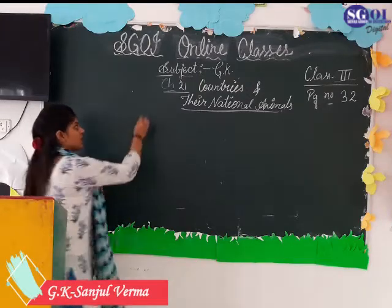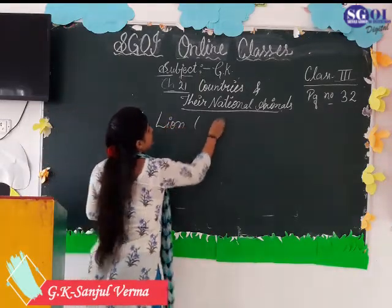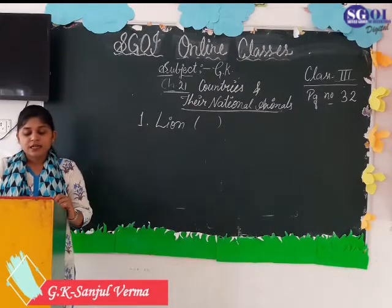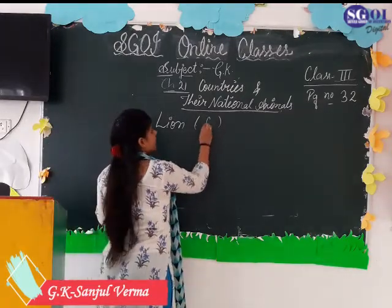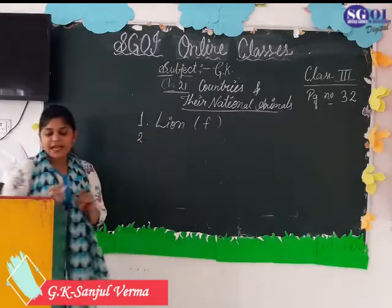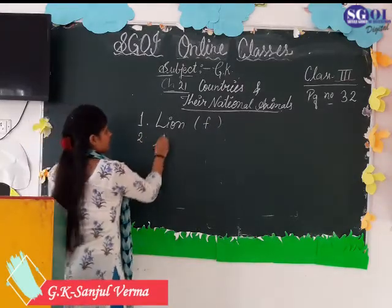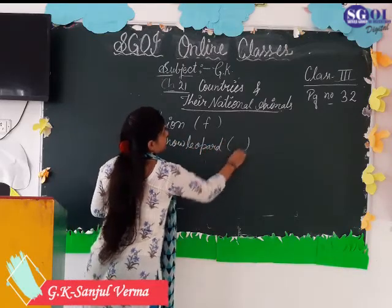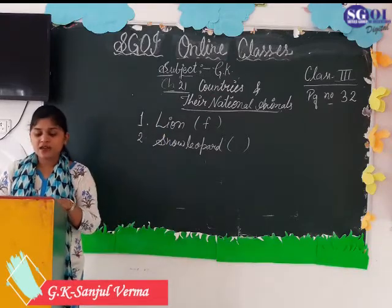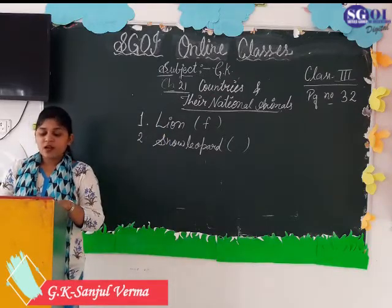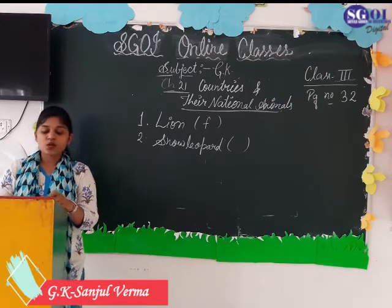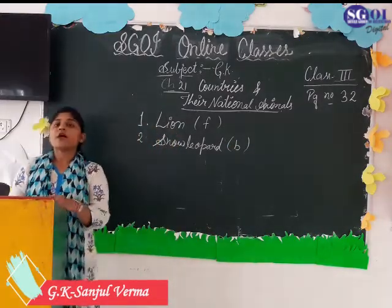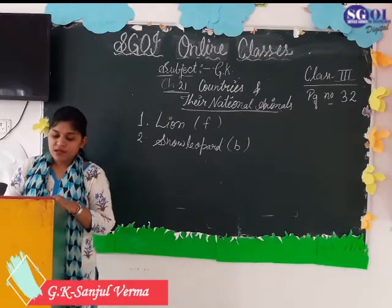First is Lion. Match it with Lion — Lion is the national animal of Netherlands. Second one is Snow Leopard. Snow Leopard is the national animal of Afghanistan. So you have to write B in the given circle.